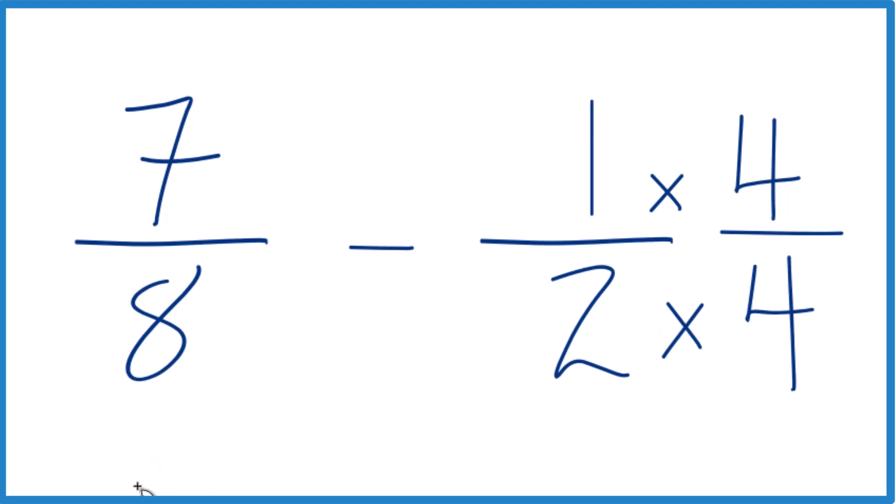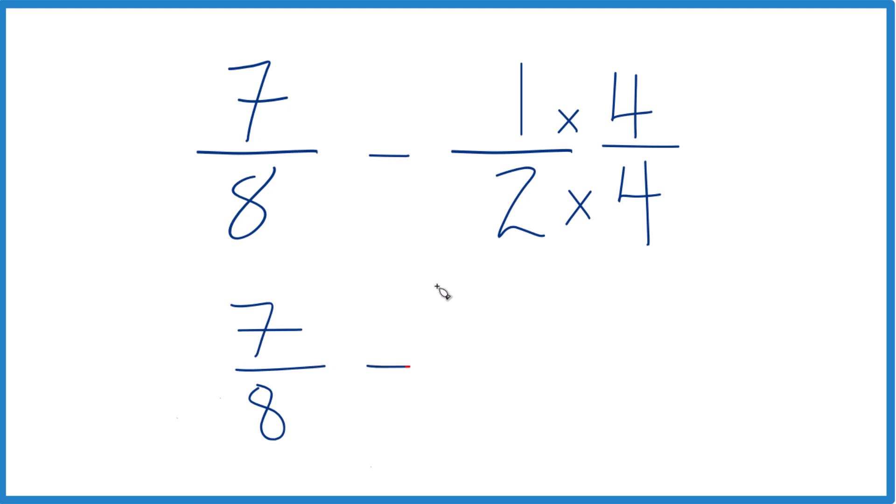But now we take our 7 eighths and we subtract 1 times 4 is 4. 2 times 4 is 8. 4 eighths, that's the same as 1 half.